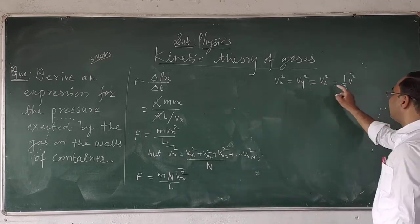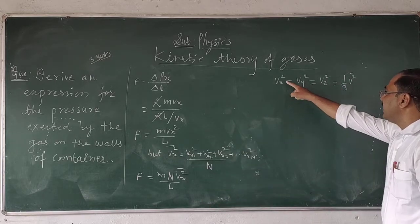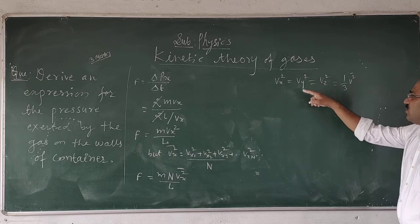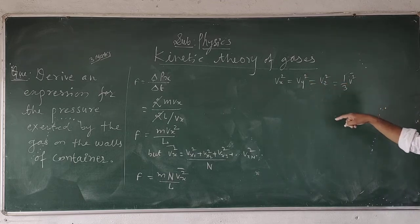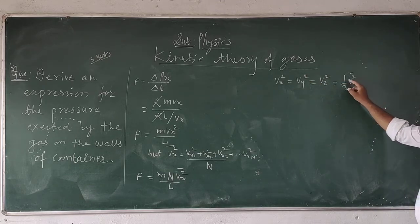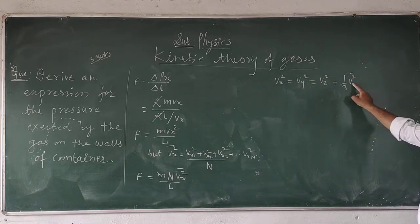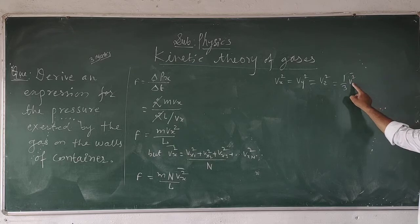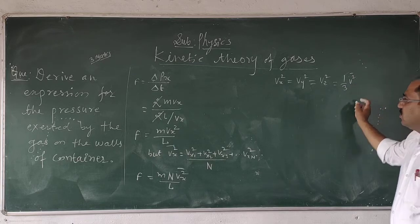You can write here: Vx squared plus Vy squared plus Vz squared is equal to one-third V mean squared.